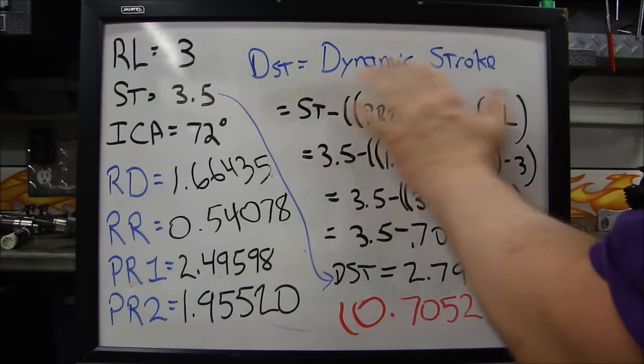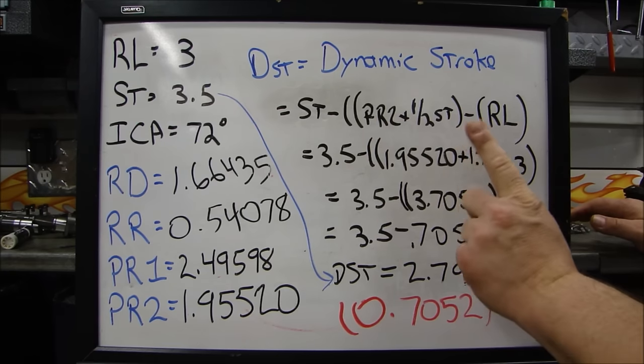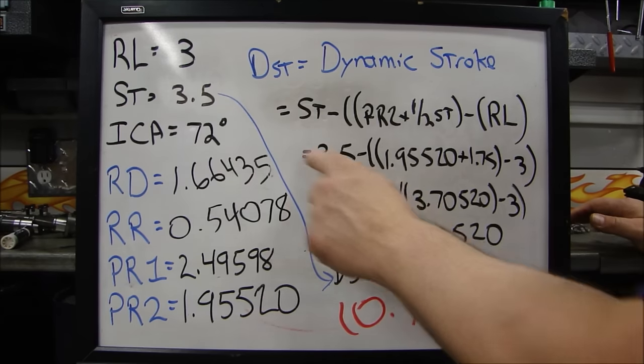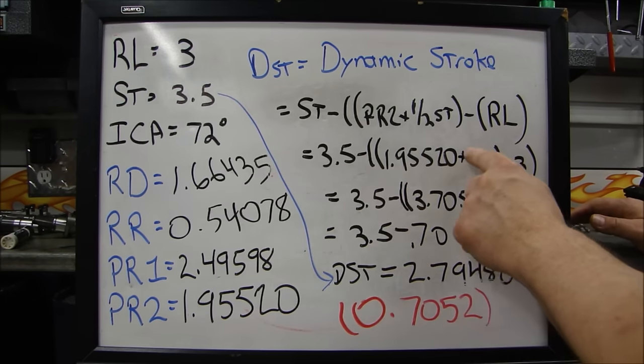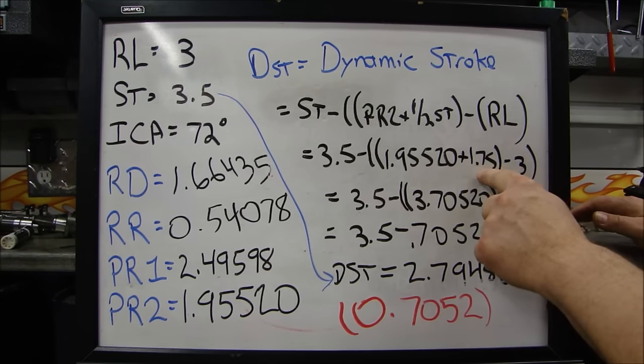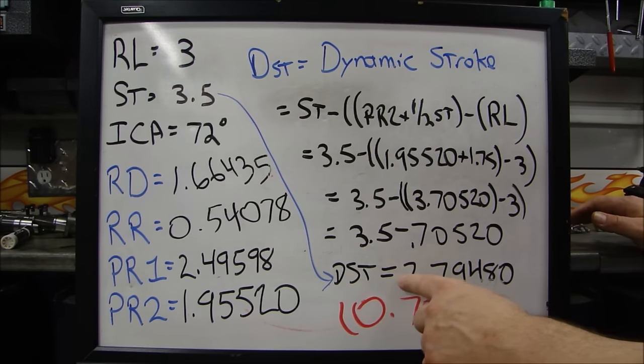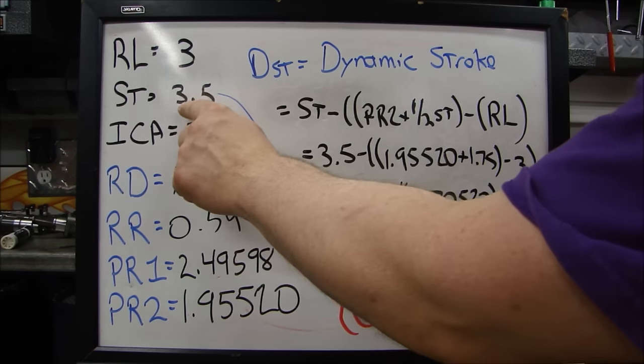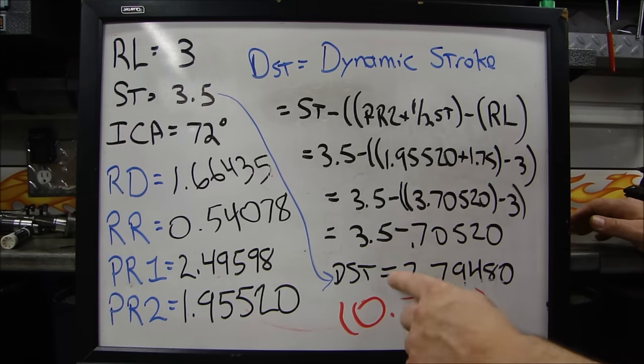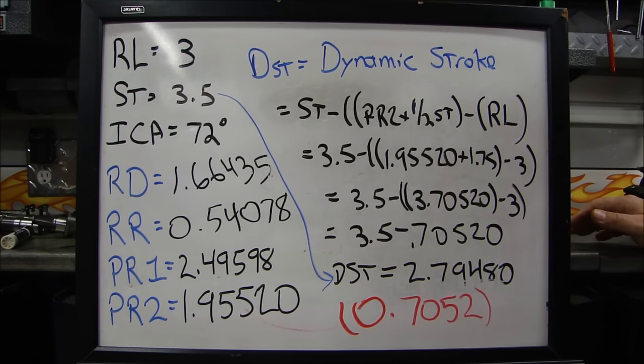Alright, now we can calculate our dynamic stroke. The dynamic stroke is our stroke minus PR2 plus one half of our stroke minus RL. Our stroke is 3.5. Our PR2 is 1.95520 plus one half of the stroke. One half of 3.5 is 1.75 minus RL, our rod length, which is 3 inches. You do all the calculations there and our dynamic stroke comes out to 2.79480.